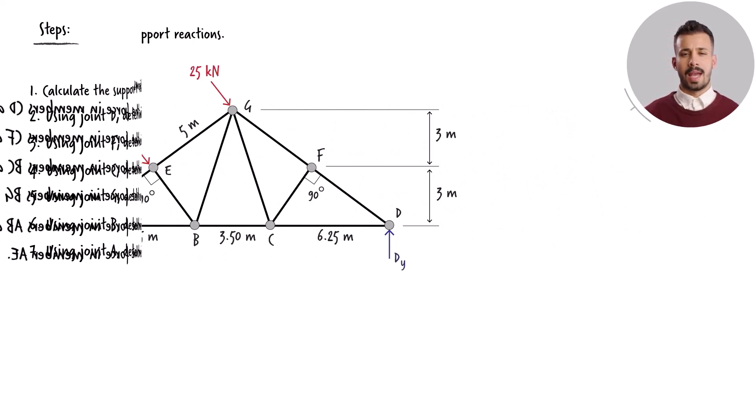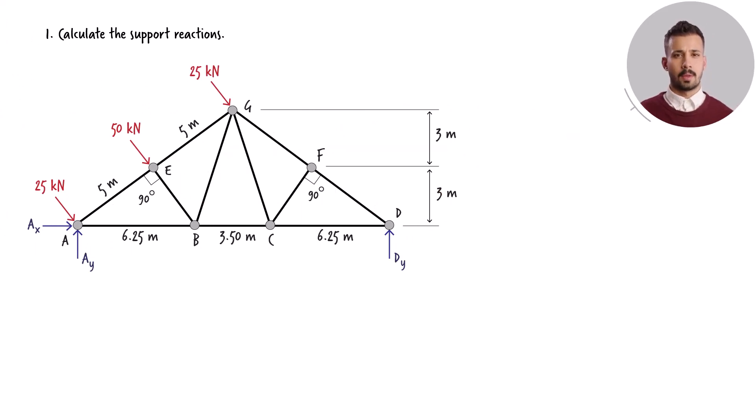To calculate the support reactions, we begin by sketching the complete free body diagram of the truss. There are 3 support reactions: 2 forces at the pin support and 1 force at the roller support.